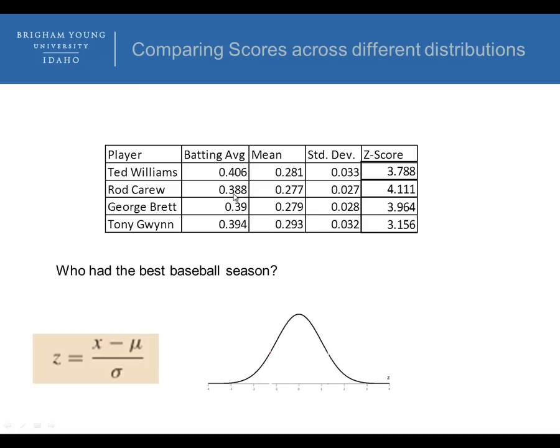Even though the batting average for Rod Carew was the smallest, because the mean was smaller between the other three and Rod Carew's, and the standard deviation for that year was also the smallest, it was a very high z-score. So for that particular year, Rod Carew perhaps had a more unusual event or value compared to the other years, that Ted Williams had .406, George Brett had .390, and Tony Gwynn had .394.